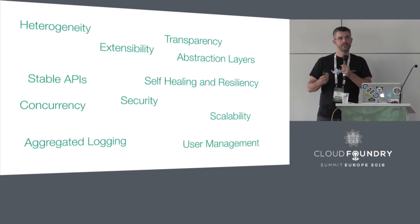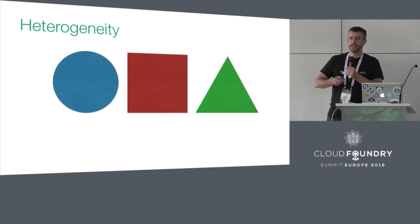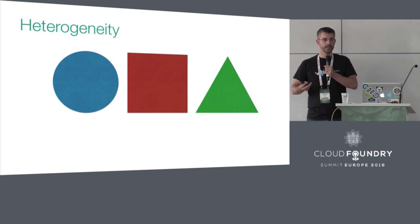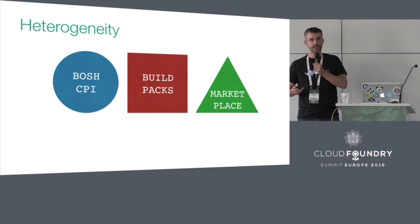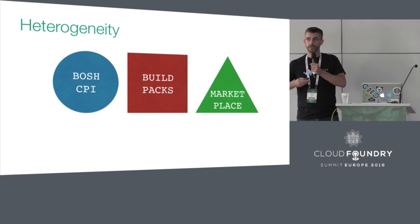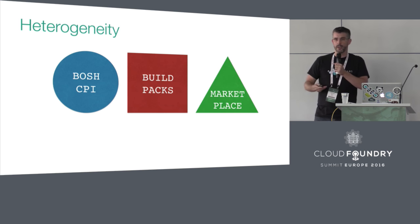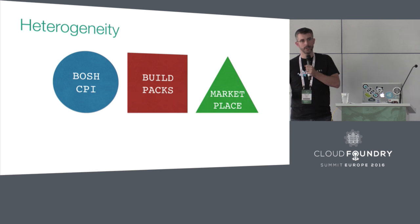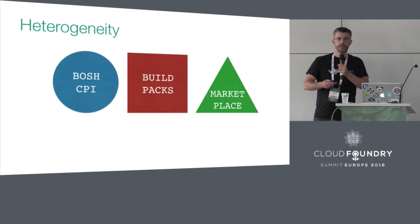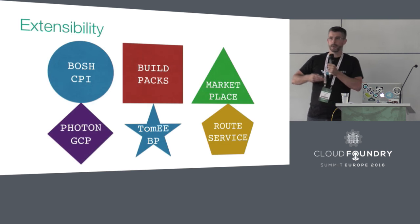Moreover, there are inherent challenges with any distributed system. For example, heterogeneity — the ability to support multiple different environments. Cloud Foundry manages this really well. It has a BOSH CPI for supporting different IaaS layers like AWS, vSphere, or Azure. We have buildpacks to support a polyglot programming environment — Ruby, Java, Node, and so on. And it also has this marketplace for middleware services like Redis, RabbitMQ, and MySQL. But all those components need to be extensible; you need to be able to extend the platform.